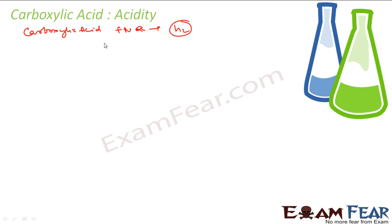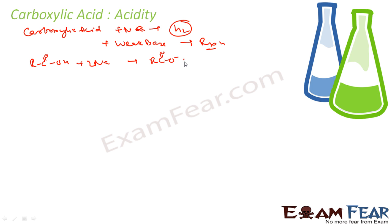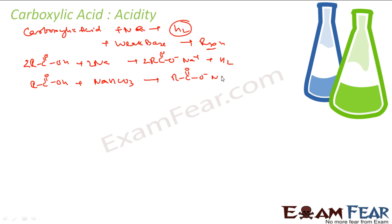Also, if you take carboxylic acid and react it with a base, you will see an acid-base reaction. For example, carboxylic acid reacts with sodium to give RCOO⁻ Na⁺ and H₂. Or if carboxylic acid reacts with a weak base like Na₂SO₃, you still see a reaction occurring.